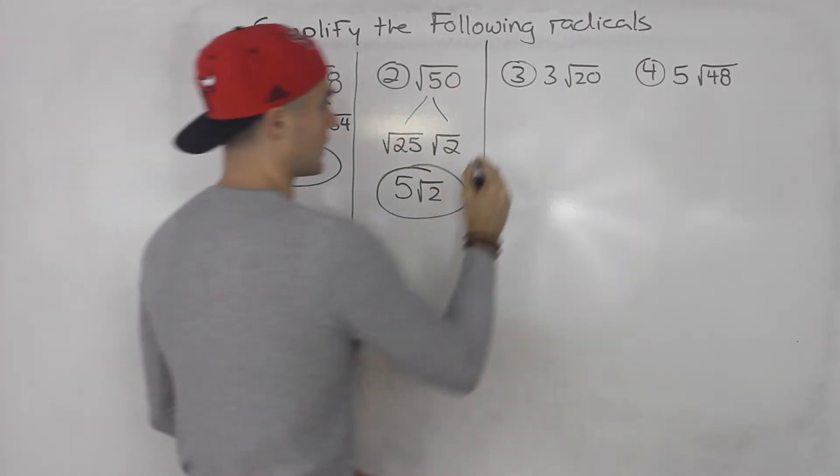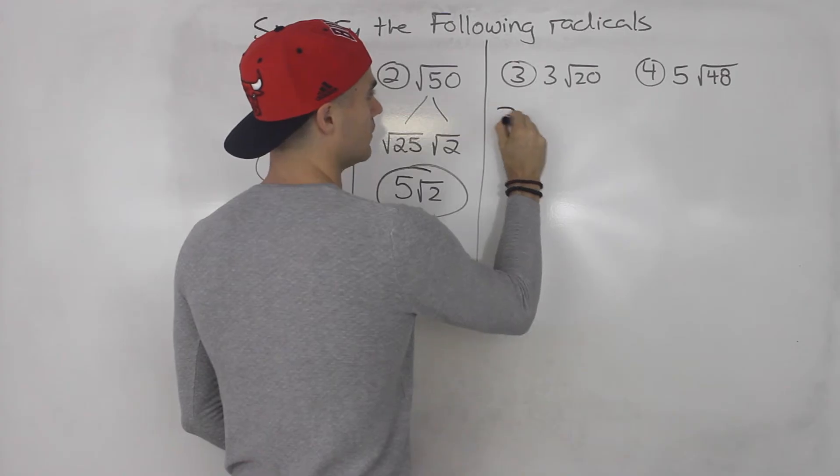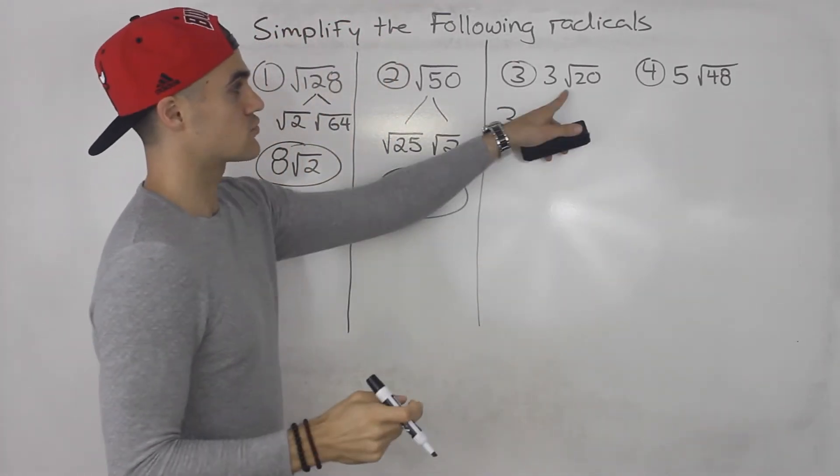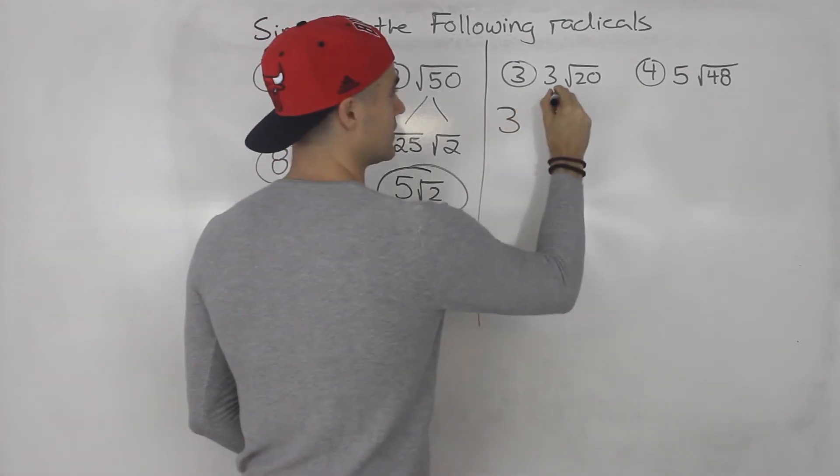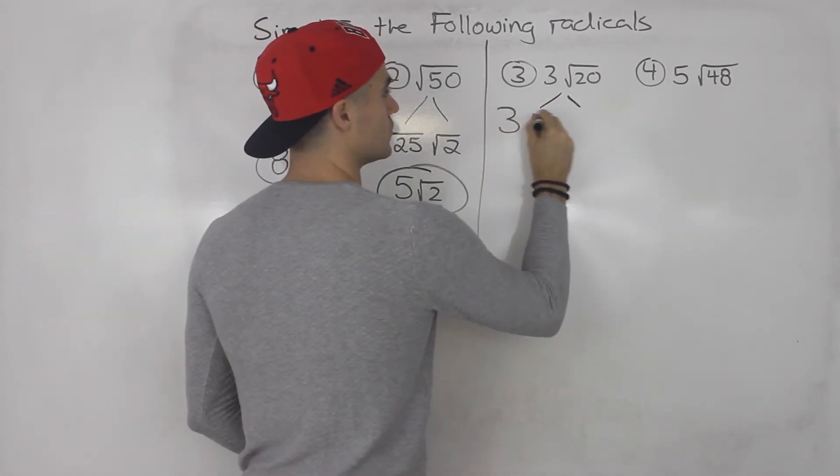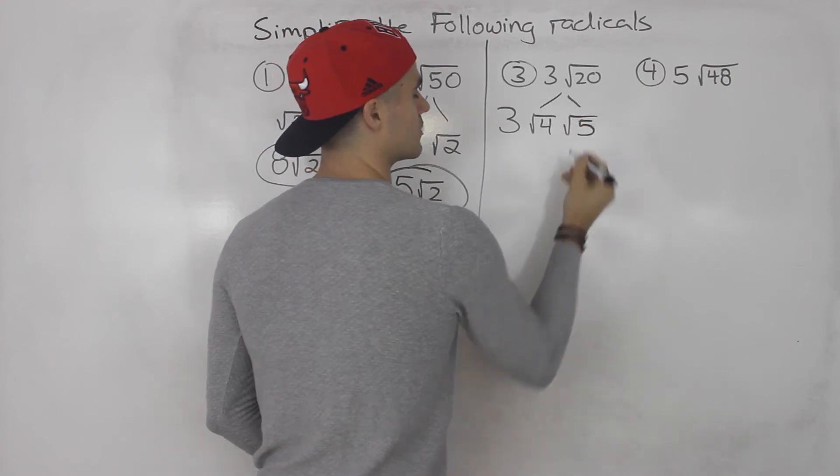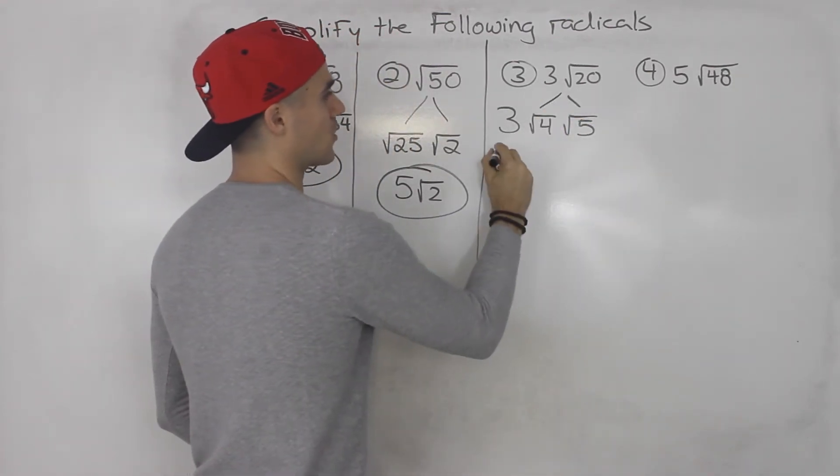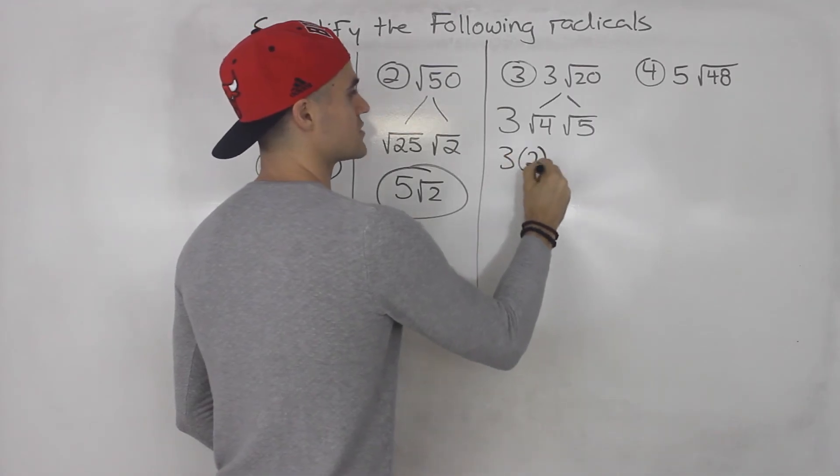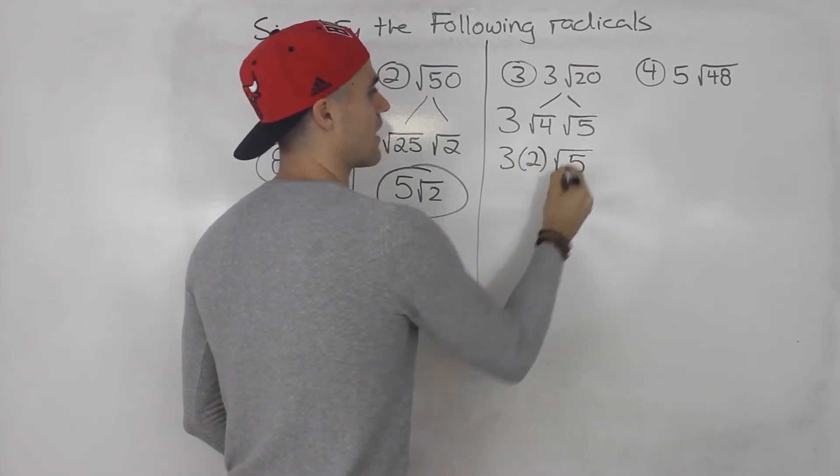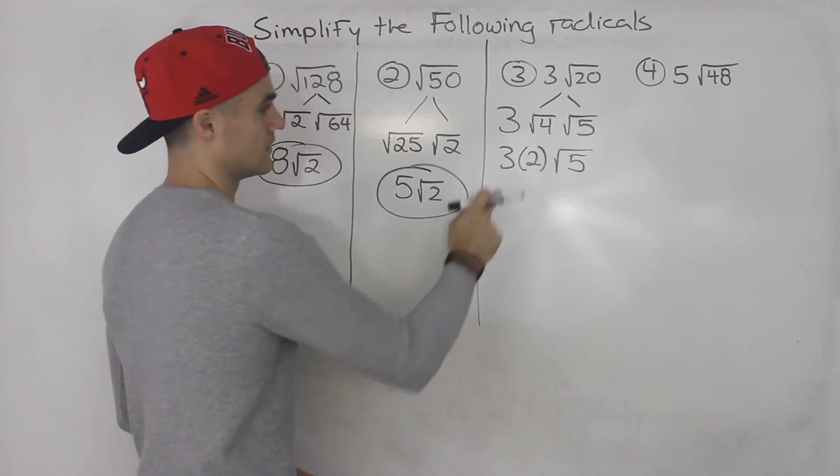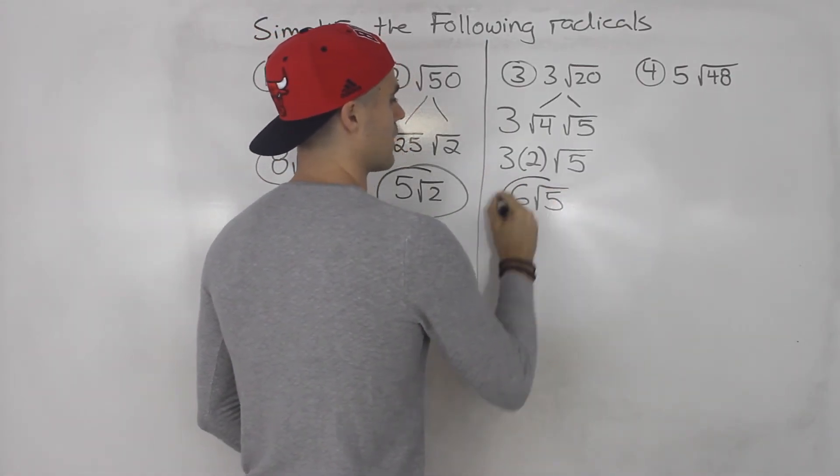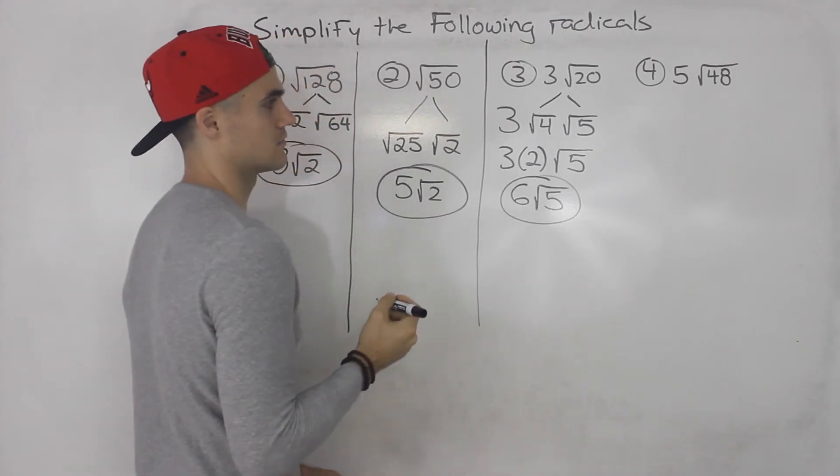What about 3 root 20? Well, the 3 we can't do anything about, so we'd have to rewrite it. Square root of 20, we can split that up into root 4 times root 5. Right? 4 times 5 is 20. Square root of 4 is 2. And then the square root of 5, we can't do anything about that. 3 times 2, 6, root 5, that is the answer right there.